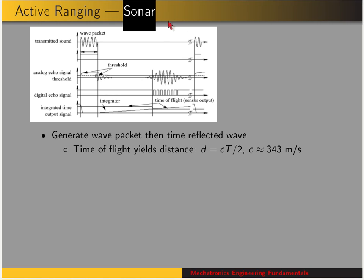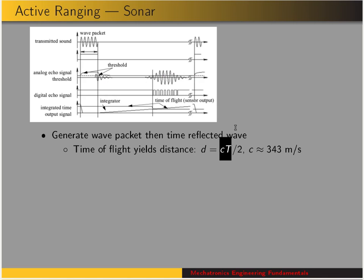The most common exteroceptive sensor is sonar. A wave packet is generated, and then that wave packet propagates through the air, strikes the object, and is reflected back to the sensor. It's the time of flight that gives an estimate for the distance to the object.